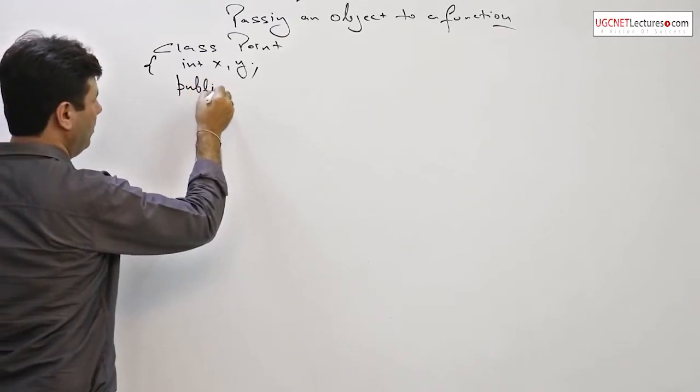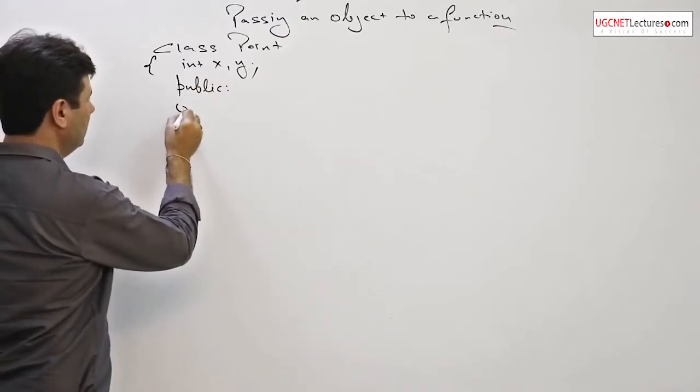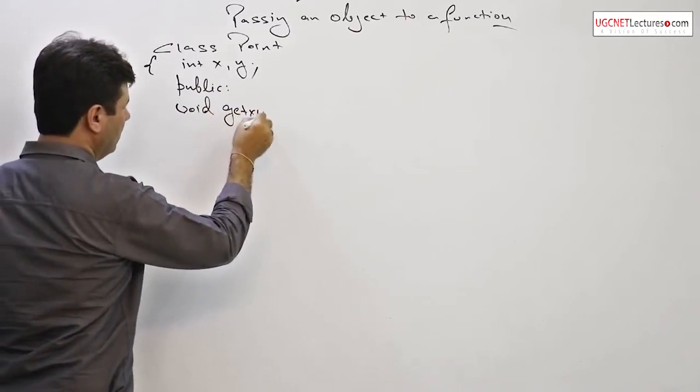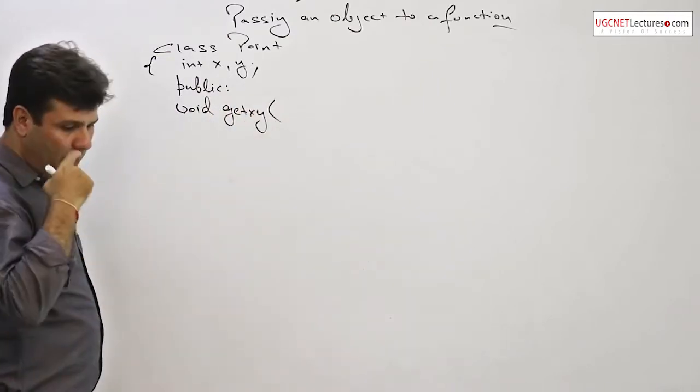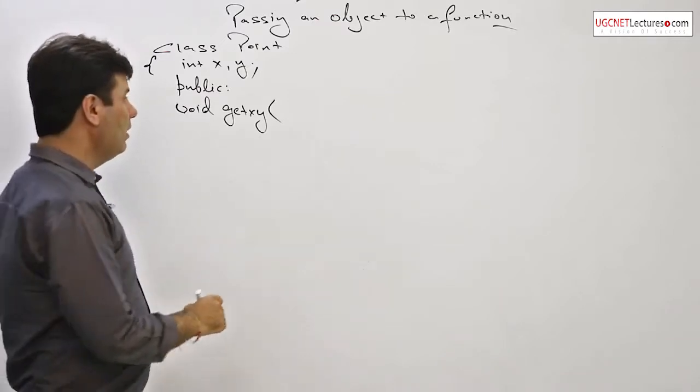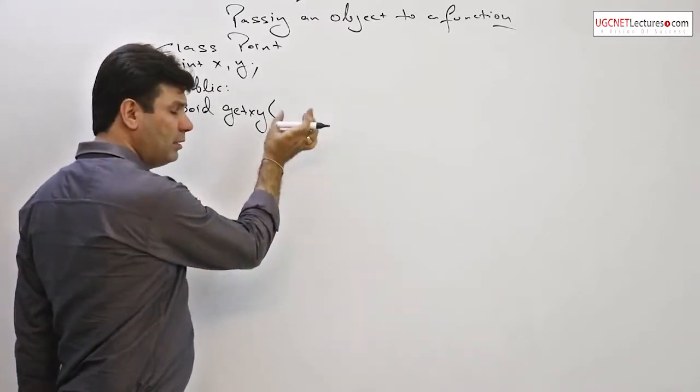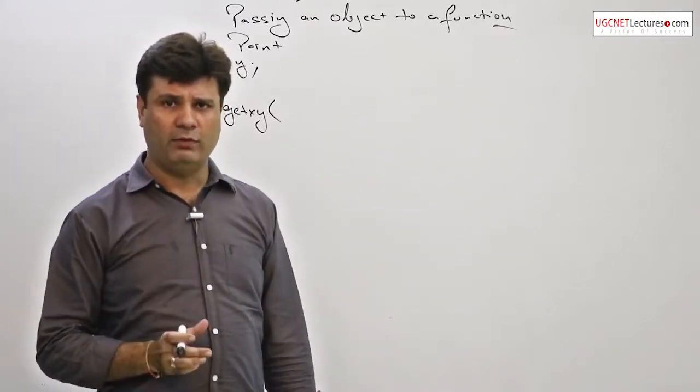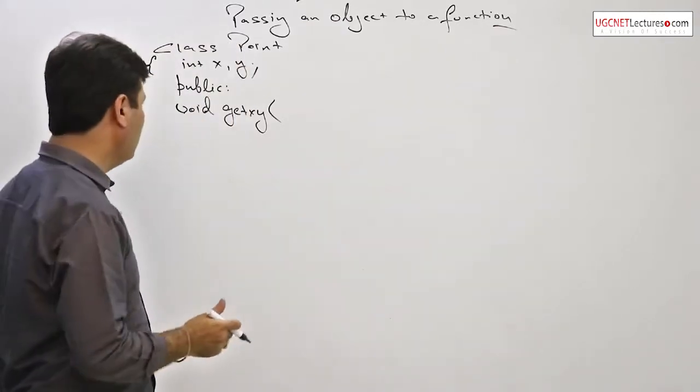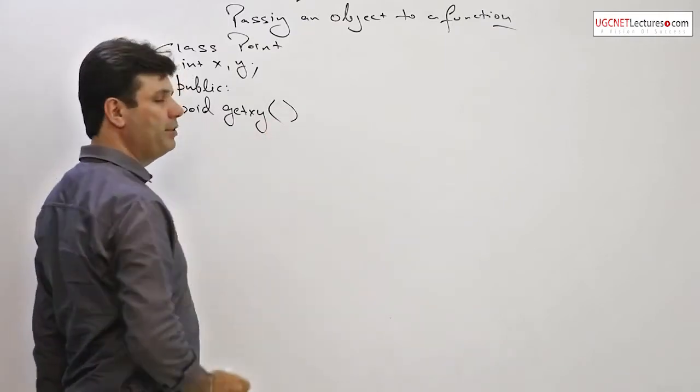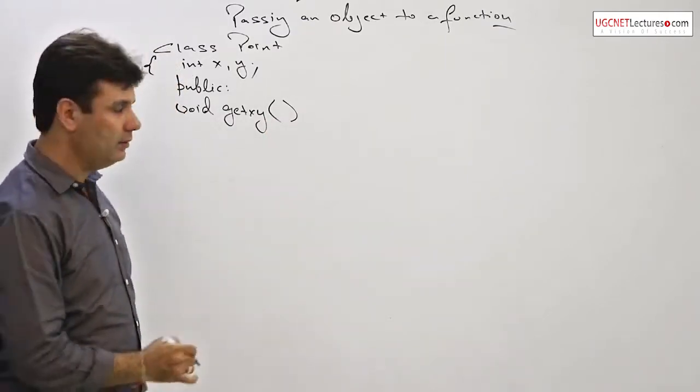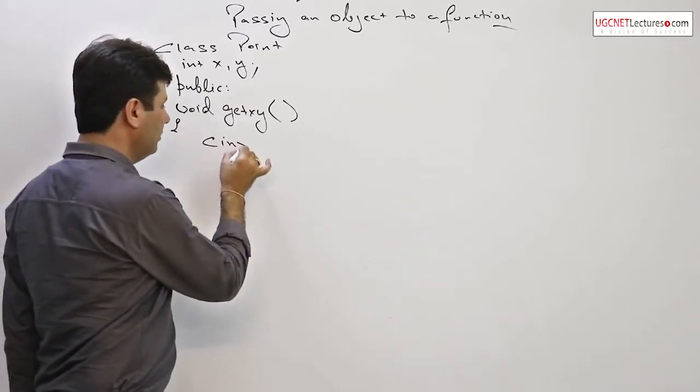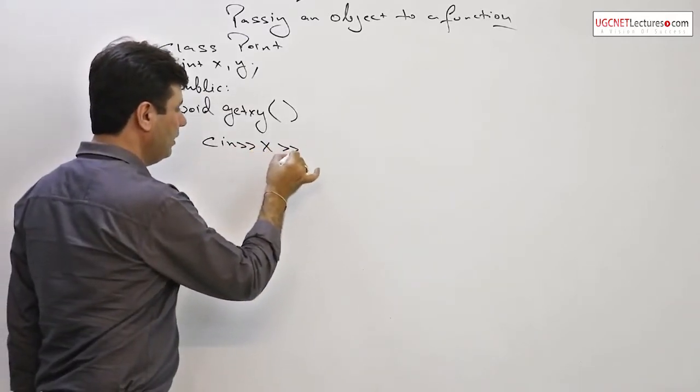I will define it publicly void get xy. If you remember in the last program in case of structure I used this parameter for a structure object, for a structure variable. As a member function no argument is required. Simple, I will write cin x cin y.